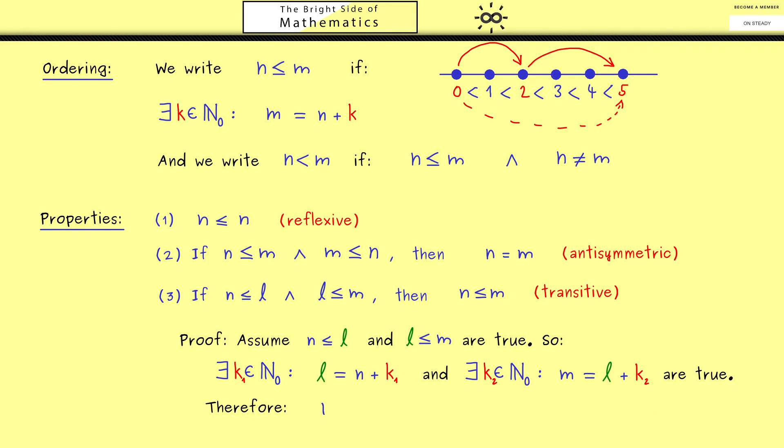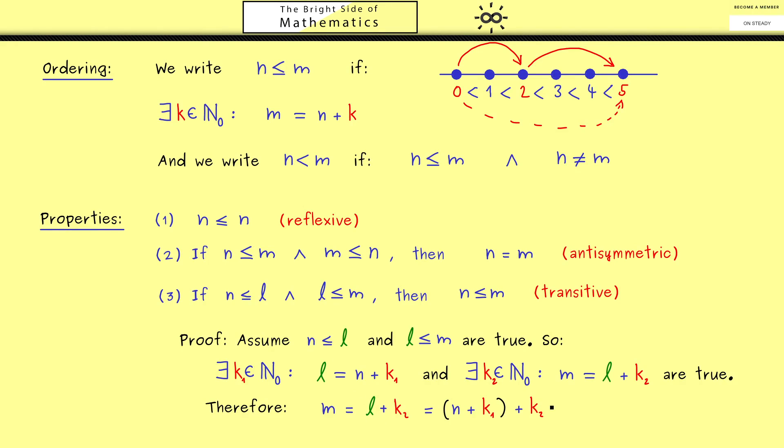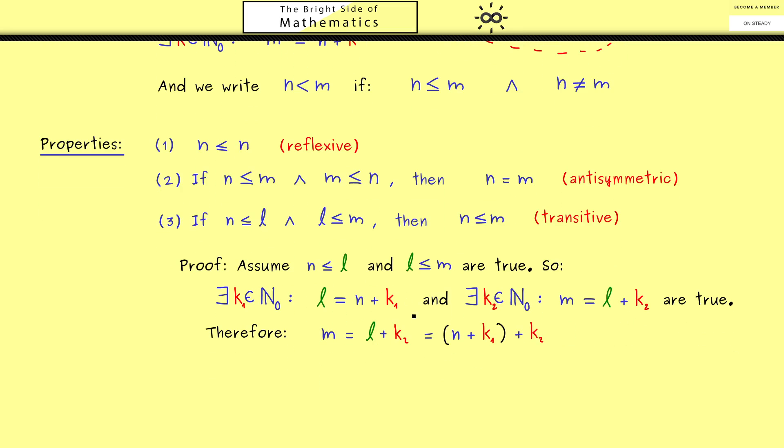Therefore we can put both things together and say that m has to be l plus k₂. But then we can put our knowledge of l in here. So we get this and there you see we can use our associativity here. Then with the parentheses on the right hand side we can just define a new number. So let's call k₁ plus k₂ just k.